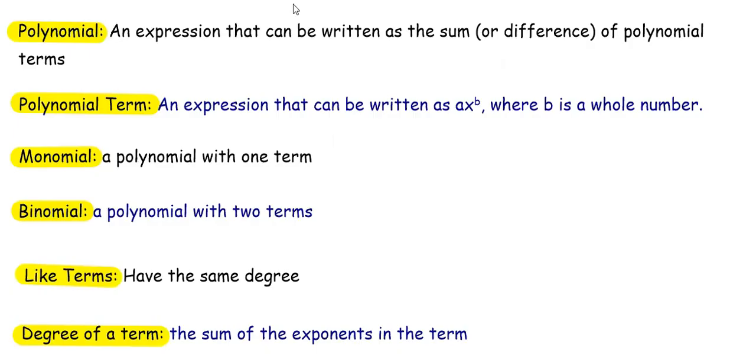Before we start adding and subtracting polynomials, let's go over some key vocabulary. A polynomial is an expression that can be written as the sum or difference of polynomial terms. A polynomial term is an expression that can be written as ax^b, where b is a whole number.